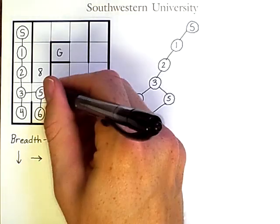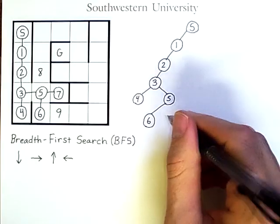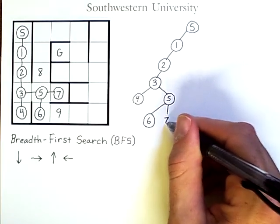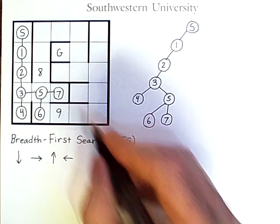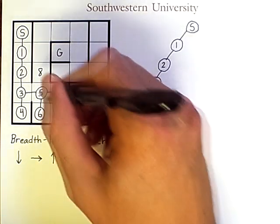Now, from six, I go to seven, and then I add it to the tree. It has no successors, so I don't need to add any additional numbers.